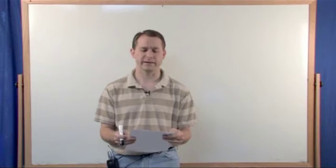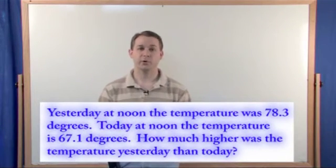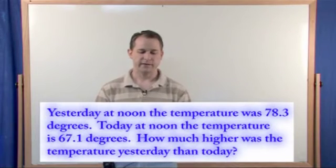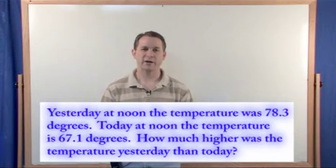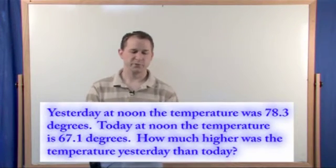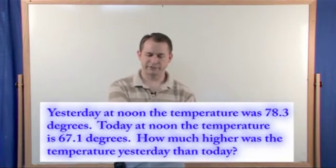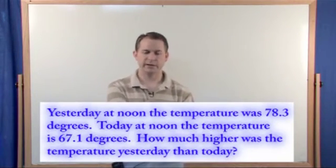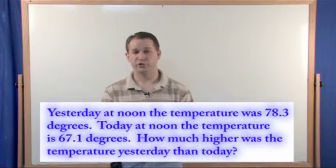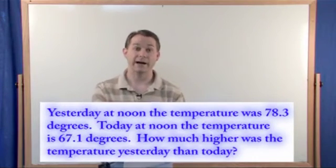The first problem says: Yesterday at noon the temperature was 78.3 degrees. Today at noon the temperature is 67.1 degrees. How much higher was the temperature yesterday than today? So you see this problem has all the elements we just talked about. We have a temperature yesterday given to you, 78.3, and today the temperature is cooler at 67.1.